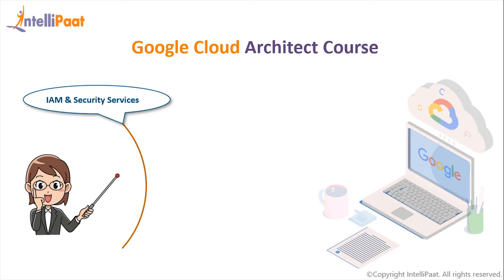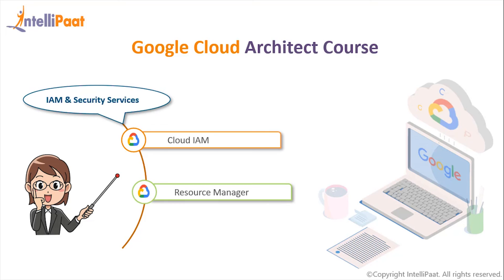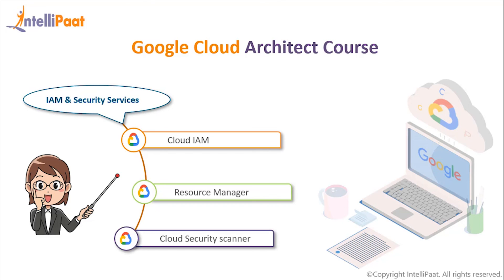Under IAM and Security Services, Cloud IAM lets administrators authorize who can take action on specific resources, along with built-in auditing. Resource Manager is a service for programmatically managing resource containers such as organizations and projects used to group and organize GCP resources. Cloud Security Scanner is a web security scanner for common vulnerabilities in App Engine applications, including cross-site scripting, flash injections, mixed content, and outdated or insecure libraries.